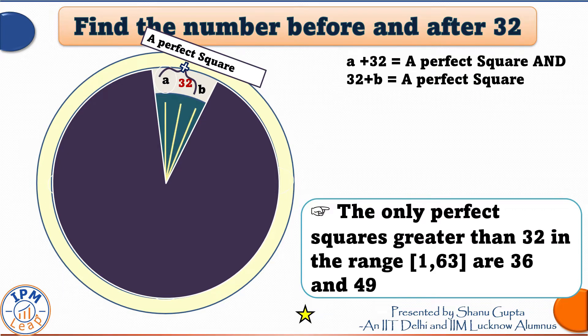Now the only perfect squares greater than 32 in the permissible range are 36 and 49. So let us take the value of a plus 32 is equal to 36 and we get a is equal to 4. And let us take the value of 32 plus B is equal to 49. This will give us B is equal to 17.